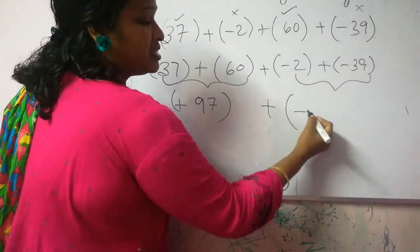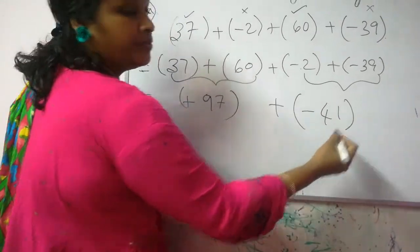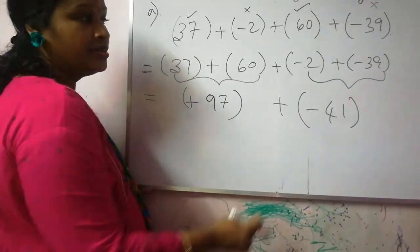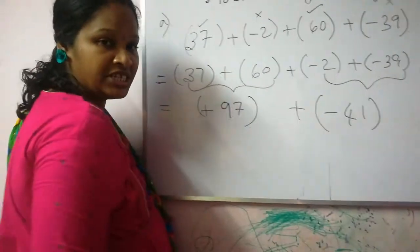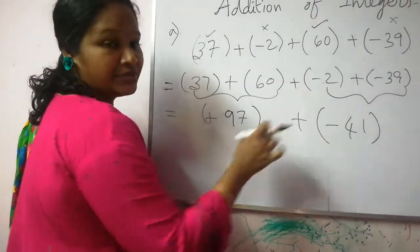Minus 2 minus 39 is minus 41. You know this already. Same sign means you have to put the sign and add the given integers. The answer takes the same sign. Got it children?